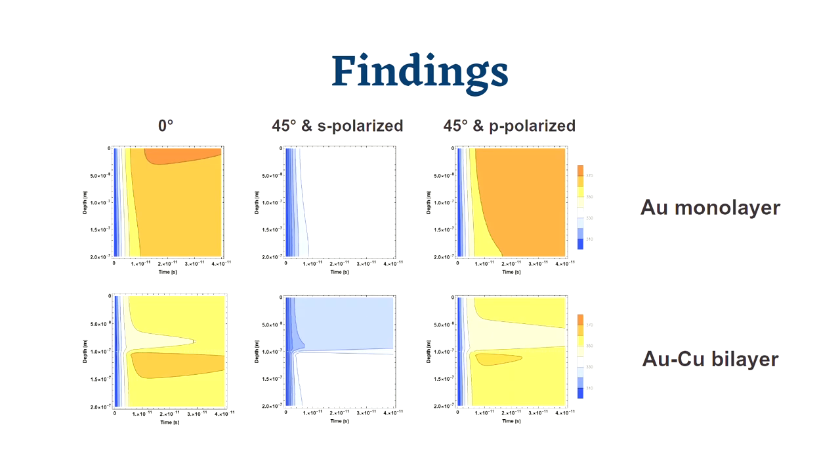Furthermore, the addition of a copper substrate layer to gold resulted in a reduction in the surface temperature.